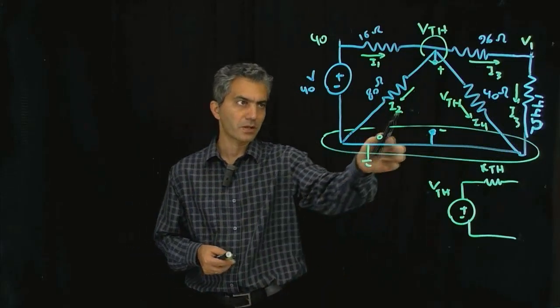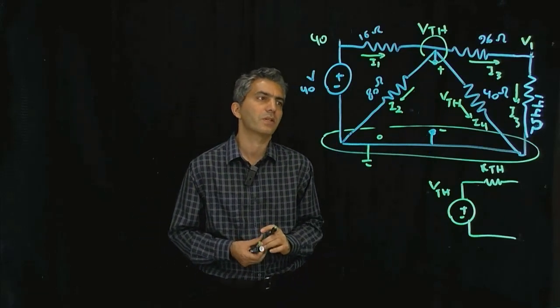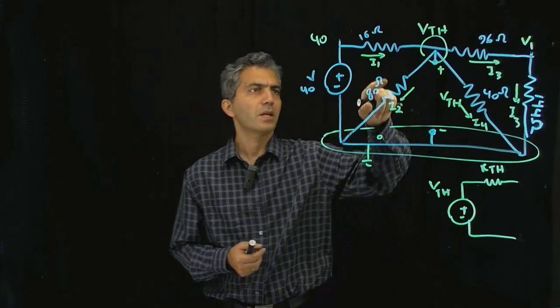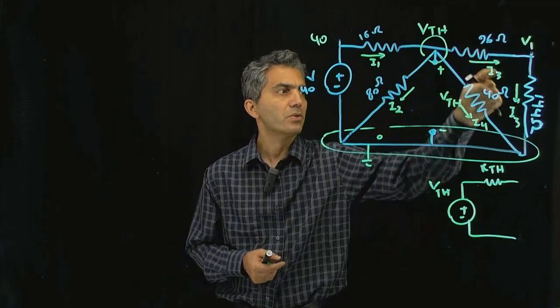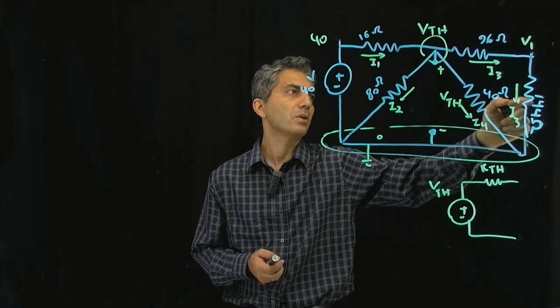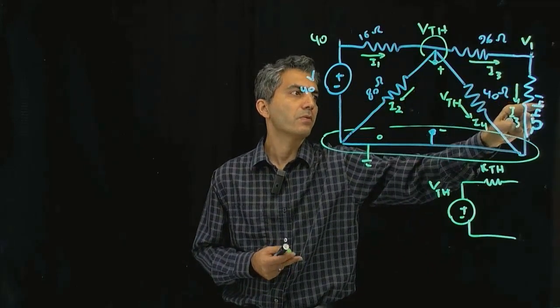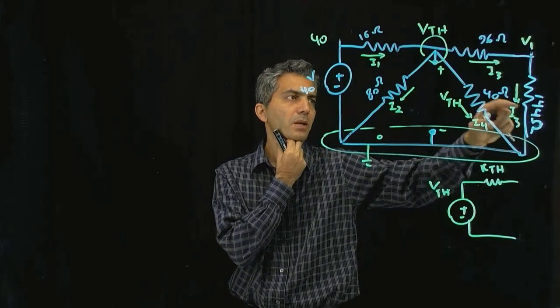Now, I'm going to show you a shortcut to calculate V_Thevenin. As you can see, I can combine all these two resistors that are in series and the result is 96 plus 144 which would be 240.